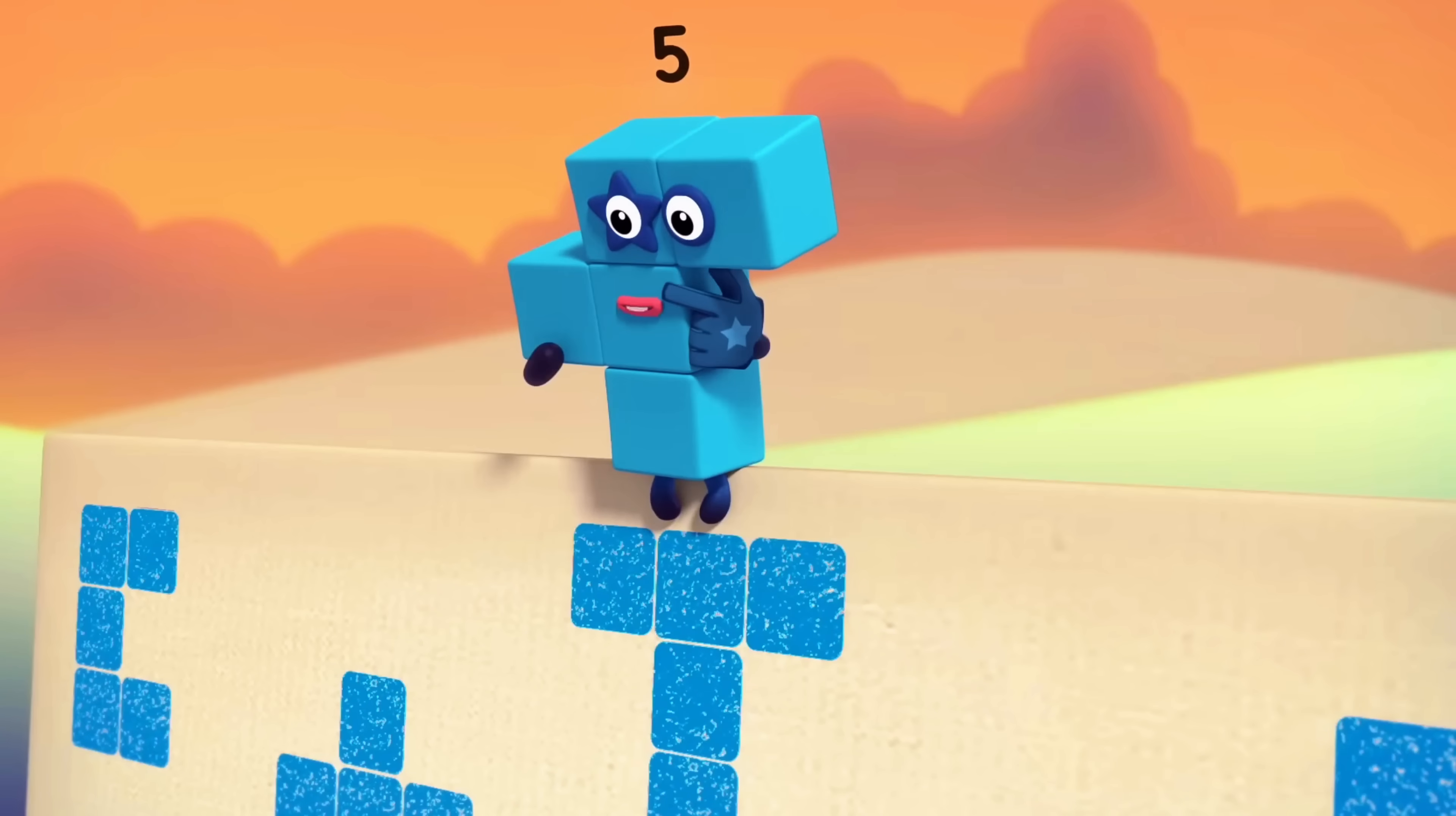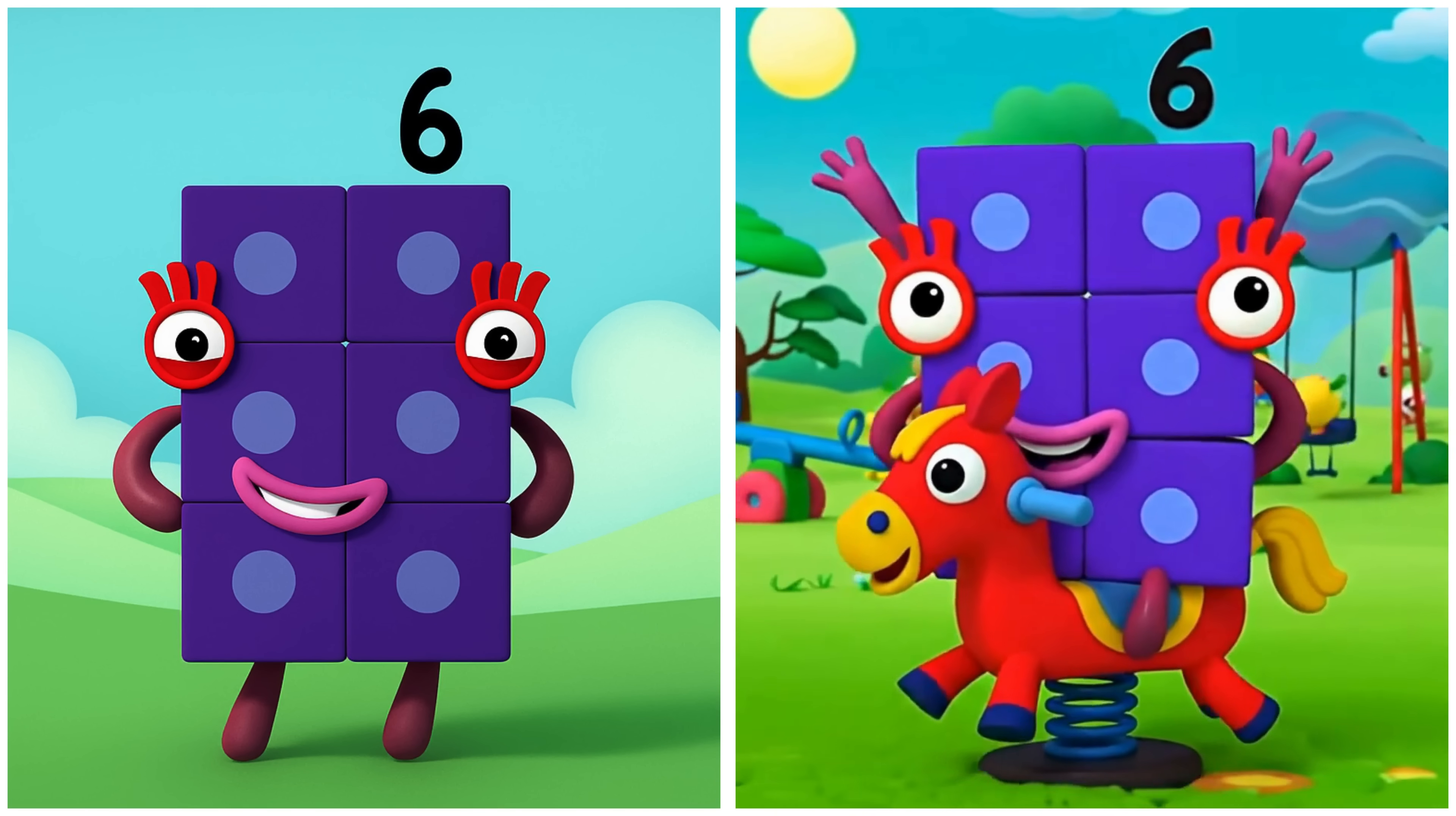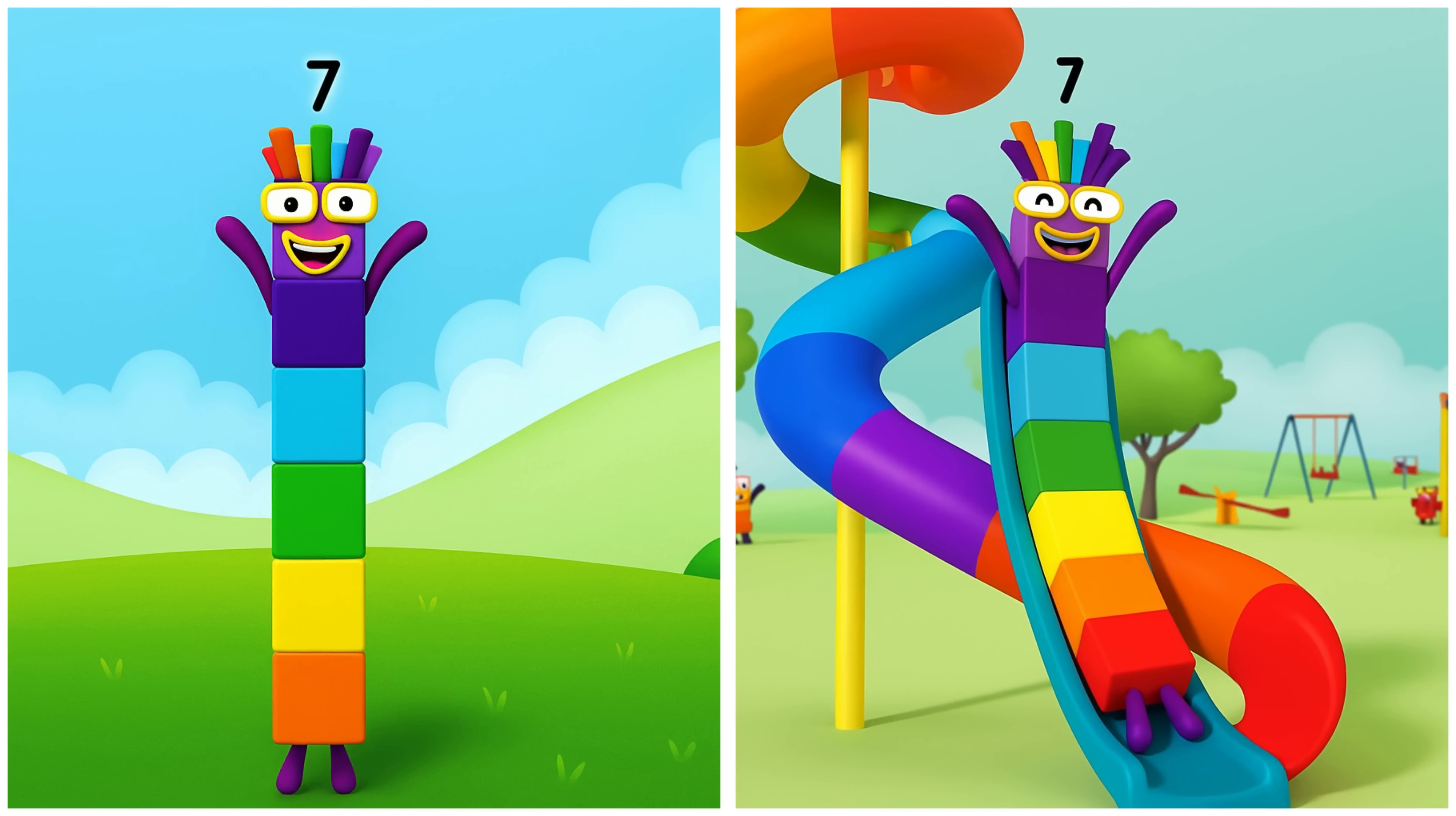So, the more blocks you have, the more shapes you can make. Six. Six rides on the spring rider. Six. Seven. Seven zooms down the spiral slide.